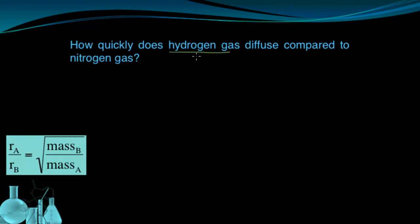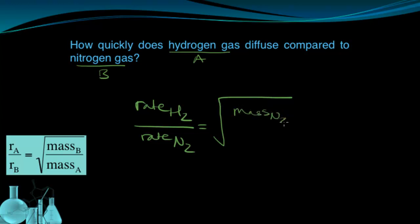Well, let's set hydrogen gas as gas A and nitrogen gas as gas B. So the rate of hydrogen gas compared to the rate of nitrogen gas is equal to the square root of the mass of B, so in this case nitrogen gas, the mass of nitrogen gas over the mass of hydrogen gas.